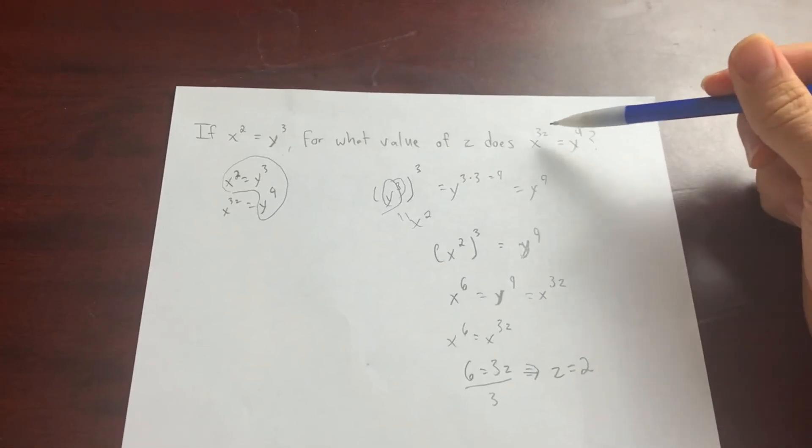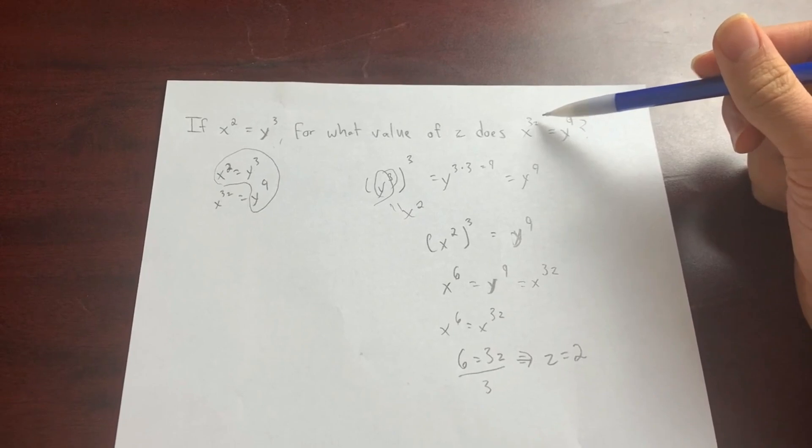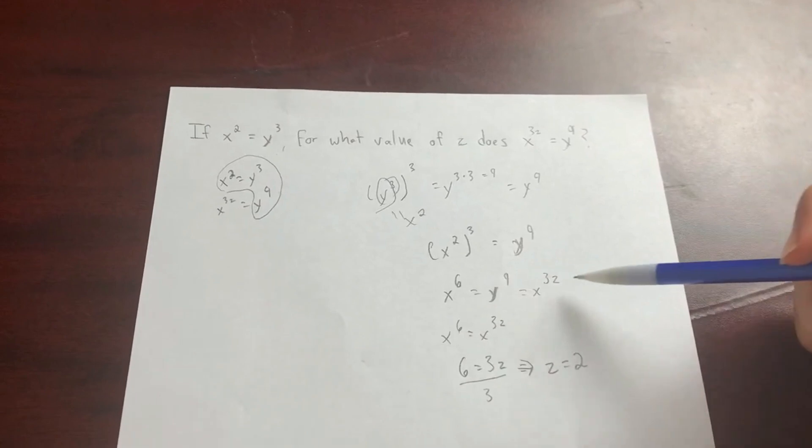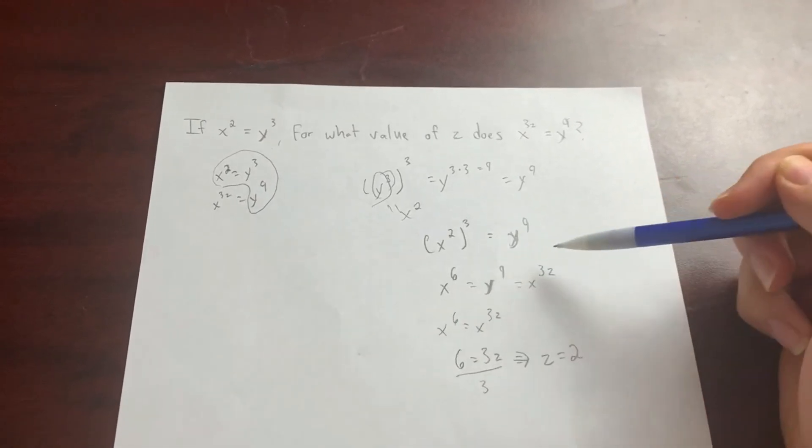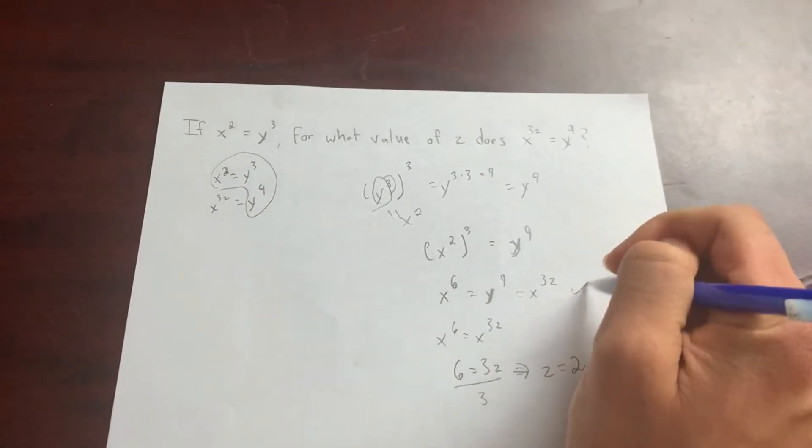Plug in z back to here. x to the 3 times 2 is 6. x to the 6 equals y to the 9. Make sure over here that was set. x to the 6 equals y to the 9, which is equal to x to the 3z. And that basically means that everything checks out.